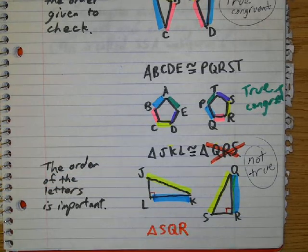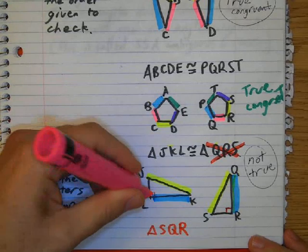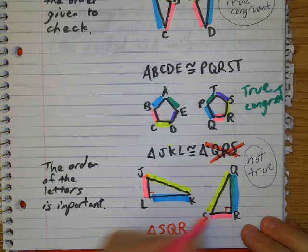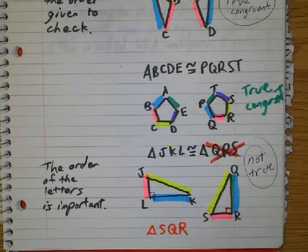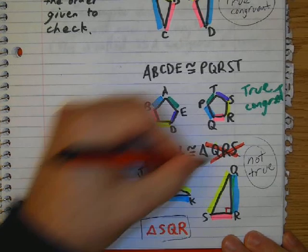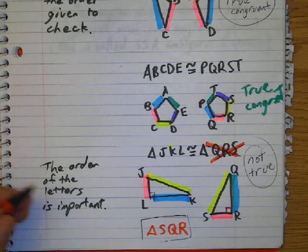So that should correspond with Q and R. And lastly, J and L, which is the first and the last. That should be congruent to S and R, which is the first and the last.